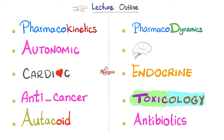Everything else is systemic pharmacology because we deal with systems: the autonomic nervous system, central nervous system pharmacology, cardiovascular pharmacology, endocrine pharmacology, anti-cancer pharmacology (namely chemotherapy), toxicology, autacoid pharmacology — including eicosanoids — and antibiotics, or preferably antimicrobials, which is a more inclusive term that includes antibacterials, antivirals, antifungals, and antiparasitic medications.